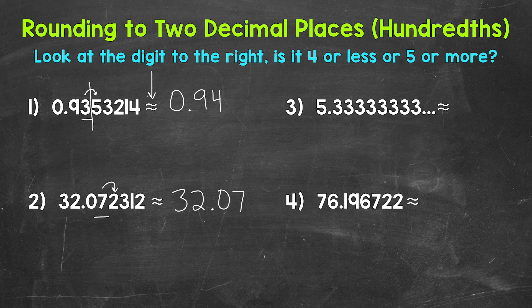Let's move on to number three where we have five and then a repeating three. We have a repeating decimal. Those threes go on forever, but we round the same way. There's a three in the hundredths. Look to the right and we have a three in the thousandths. Three is four or less. So this decimal rounds to five and thirty-three hundredths.